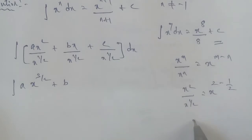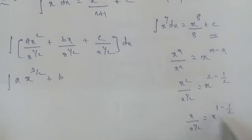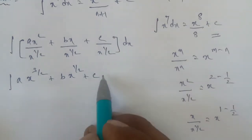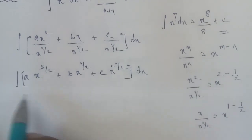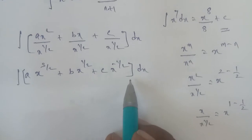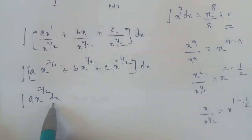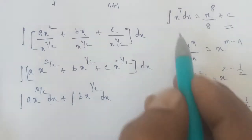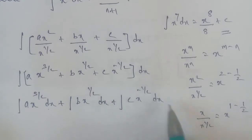Applying the index subtraction: for ax², that is x power of 2 minus 1 by 2, giving x power of 3 by 2. For bx, that is x power of 1 minus 1 by 2, giving x power of 1 by 2. For c, that is x power of 0 minus 1 by 2, giving x power of minus 1 by 2. So the integral becomes: integral of a·x^(3/2) + b·x^(1/2) + c·x^(−1/2) dx.